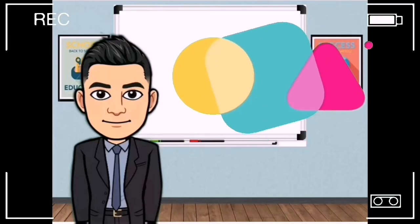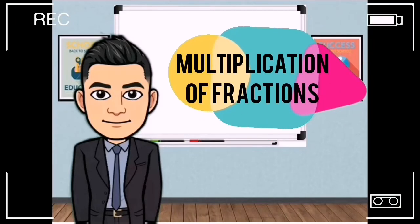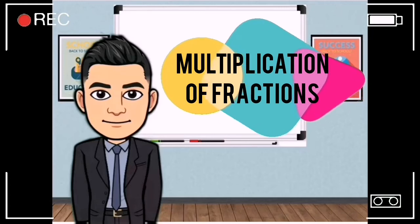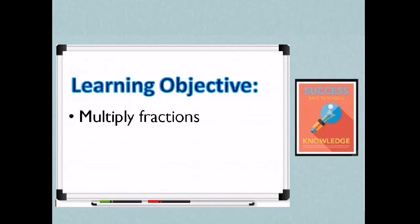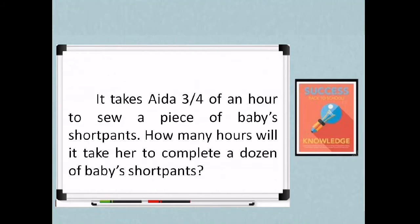Our topic is all about Learning Objective: Multiply Fractions. So this time, the involved operation of rational numbers is multiplication. So let us consider this situation. It takes Ida three-fourths of an hour to sew a piece of baby's short pants. How many hours will it take her to complete a dozen of baby's short pants?